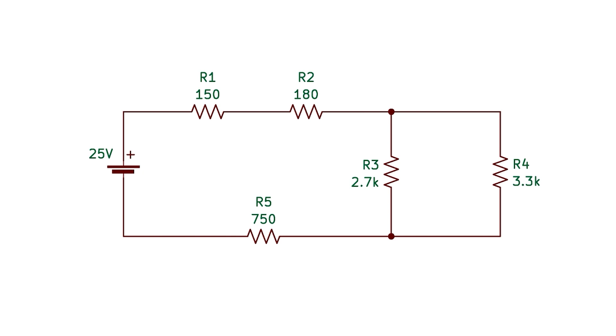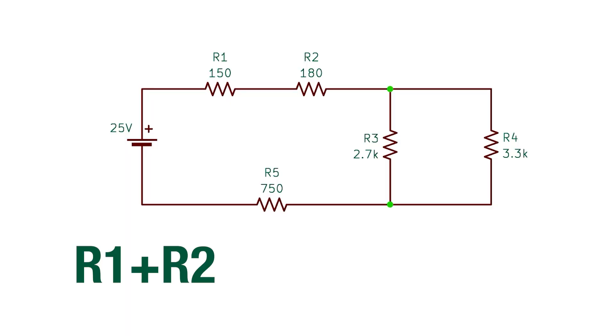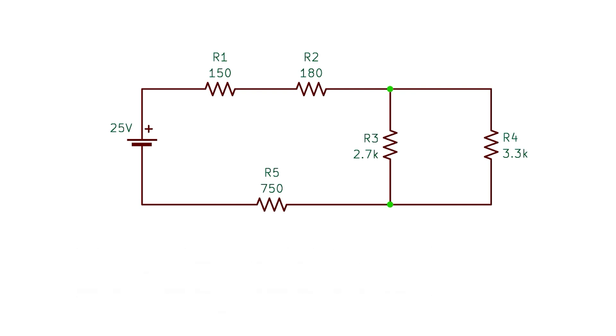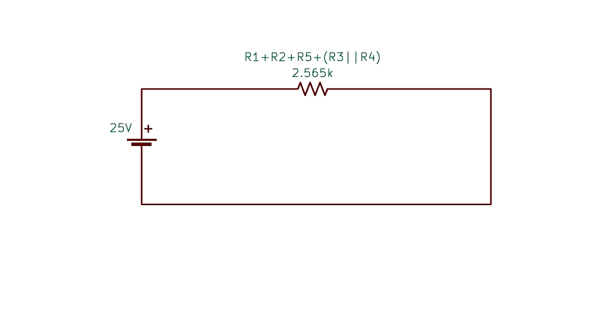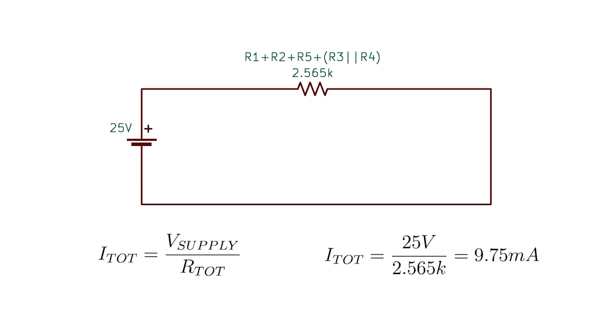Now that we have more tools at our disposal, we can get back to the circuit we ultimately wanted to solve. The first step is to find the total impedance. For series resistors we add the values together; for parallel resistors we use the ratio formula or the one-over-one-over rule. This circuit simplifies to R1 plus R2 plus parallel R3 and R4 plus R5. Substituting values: 150 ohms for R1, 180 ohms for R2, 750 ohms for R5, and 1.485k for R3 and R4 in parallel gives a total resistance of 2.565k. Using Ohm's law, 25 volts divided by 2.565k gives a total current of 9.75 milliamps.